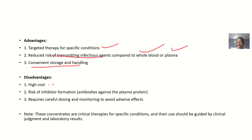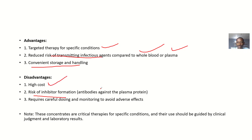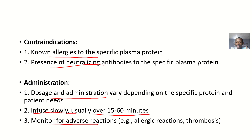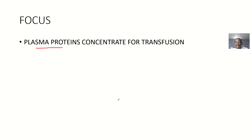The disadvantages: because you are concentrating something, you need much more whole blood to concentrate the plasma from it, so there is a high cost. There is also a risk of inhibitor formation — antibodies could be formed against the plasma protein. It also requires careful dosing and monitoring to detect any adverse reactions.